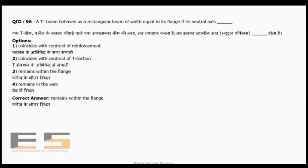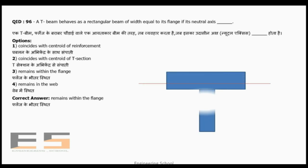Question 96: A T-beam behaves as a rectangular beam of width equal to its flange if the neutral axis remains within the flange. When the compression zone stays within the flange portion, the T-beam behaves like a rectangular beam.